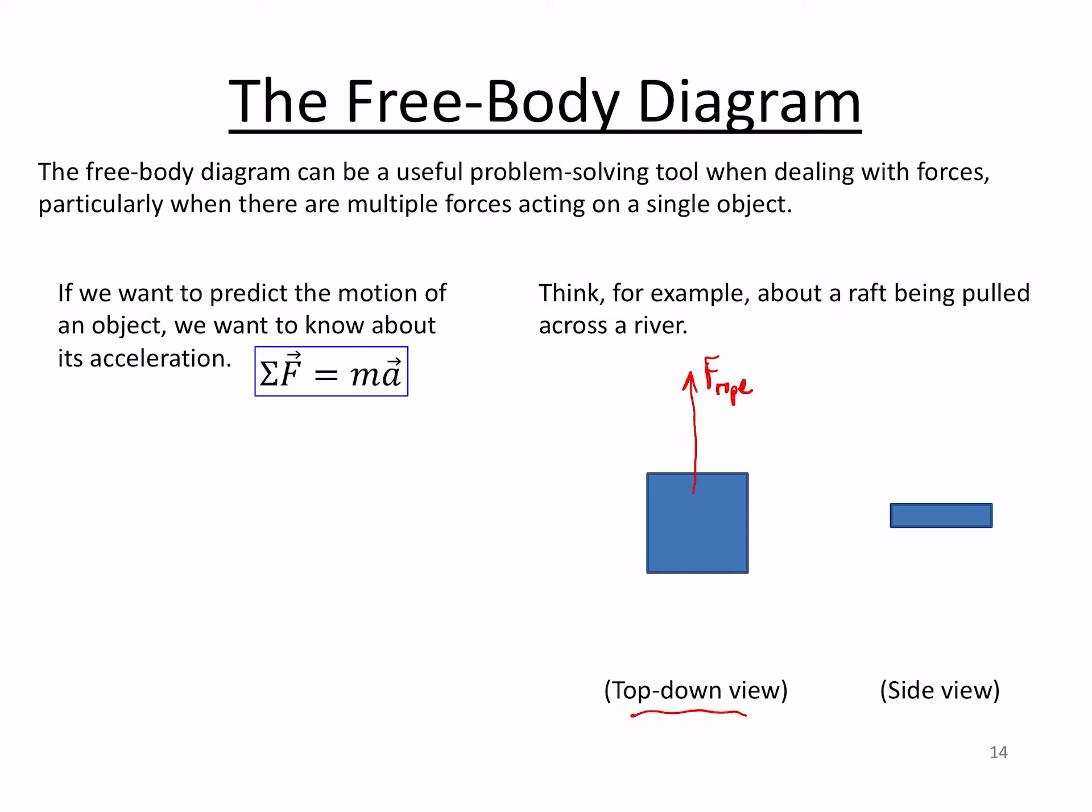Well, we could think about, if this is down river, we could think about a force from the current, right? So we call it F sub C. We could think about if the velocity of the raft is in this direction, I'll sort of draw the arrow over here so we don't mistake it for a force, it's not attached to the object. Well, then there's going to be some drag from the water going across the object, across the raft in this case, that will oppose that motion. So some force due to drag.